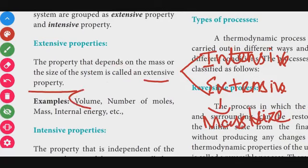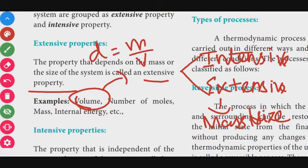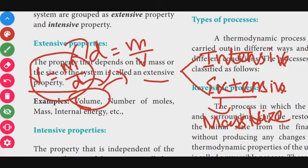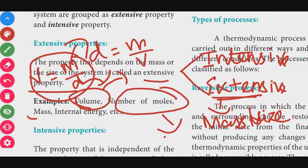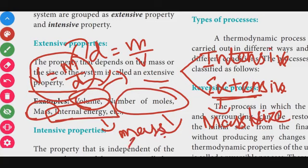Examples of extensive properties: volume — since density equals mass by volume, volume depends on mass and size. Number of moles also depends on mass or size. Internal energy is basically work done and also depends upon the mass or size of the system. These are all extensive properties.